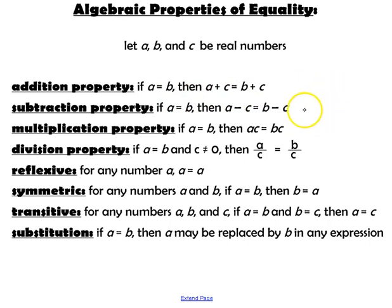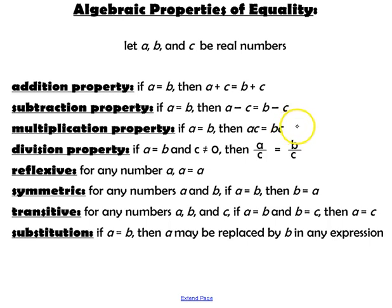The subtraction property states that if you have a true equation, you can subtract the same number from both sides. Multiplication: you can multiply both sides by the same number. Division: as long as the number is not equal to zero, you could divide both sides of the equation by the same number, and the equation is still true.